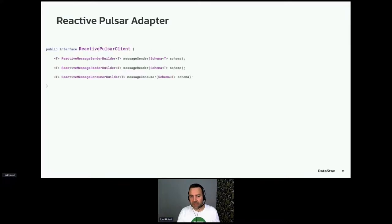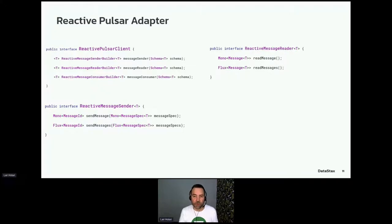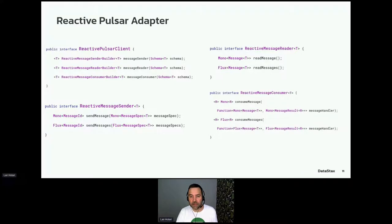The main interface in this library is the ReactiveClient facade, containing builder methods for sender, reader, and consumer. It doesn't directly return those components — you complete the builder first. On the sender there are two methods: sendMessage for a single message and sendMessages for streaming a Flux. The reader similarly has methods for reading one or many. The reactive message consumer has two methods — consumeMessage and consumeMessages — and the consumeMessages method signature is a bit more complex, which we'll cover later.